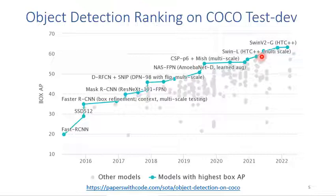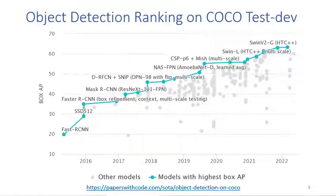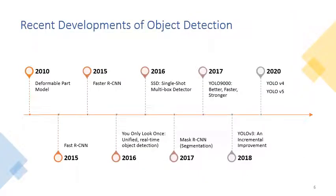But today, in 2022, the best model uses the Swin model, which is based on the vision transformer, and has achieved the highest accuracy. Today we will introduce recent developments of object detection, mainly about the RCNN and YOLO architectures.